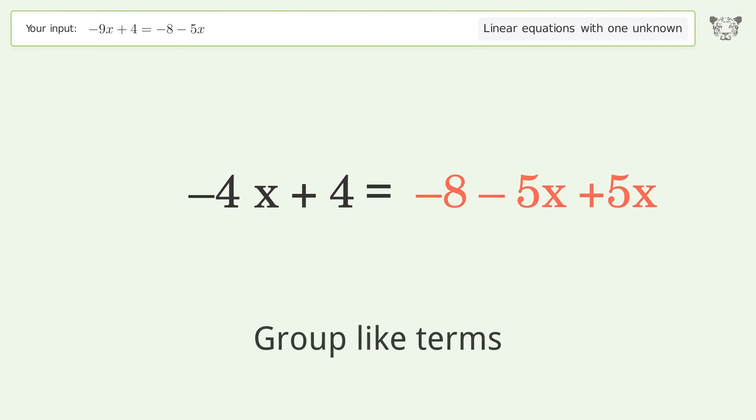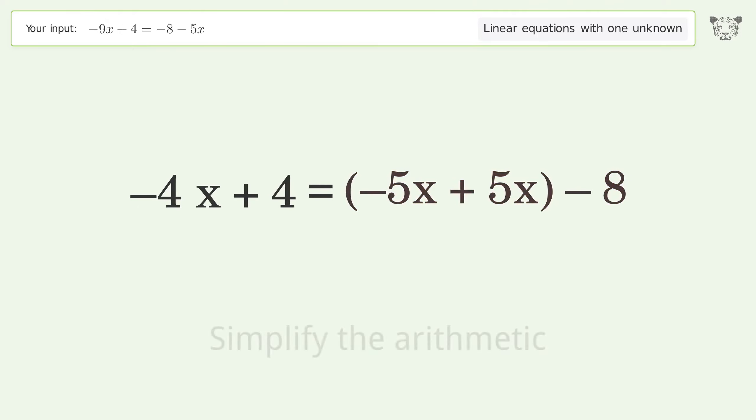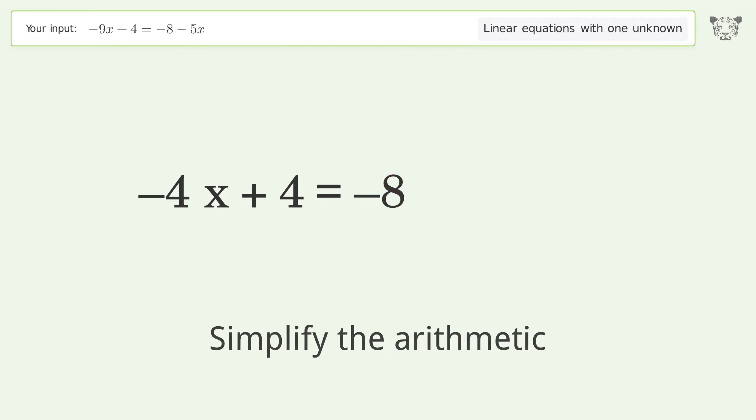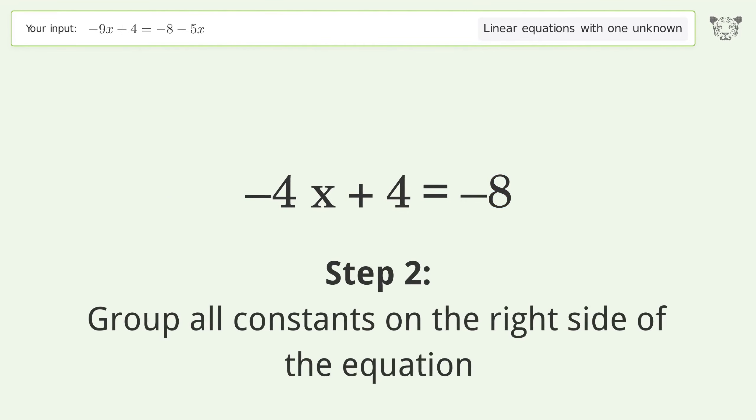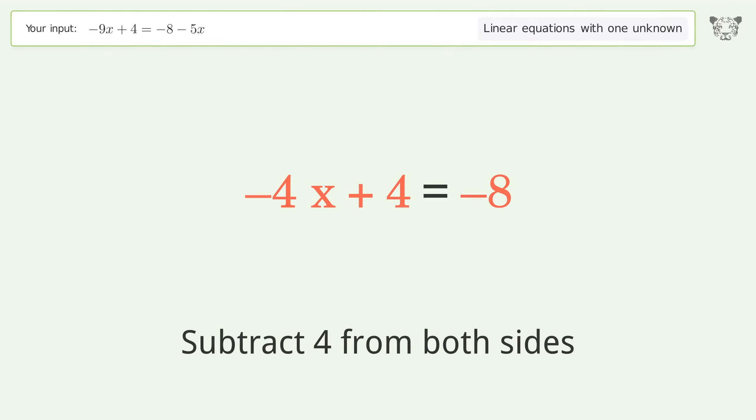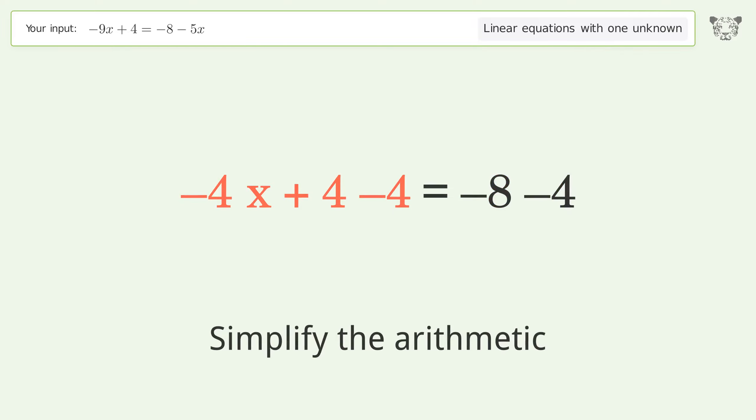Group like terms. Simplify the arithmetic. Group all constants on the right side of the equation. Subtract 4 from both sides. Simplify the arithmetic.